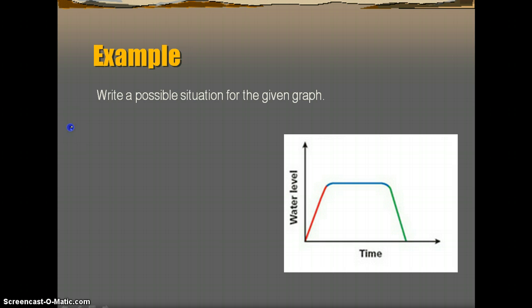So the first thing that we have is the red portion. And the red portion is increasing steadily over time. You can tell that it's steady because it's not wobbly or curved in any way, shape, or form. It's just making a nice, steady increase.